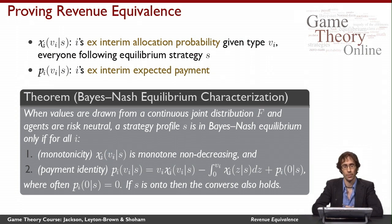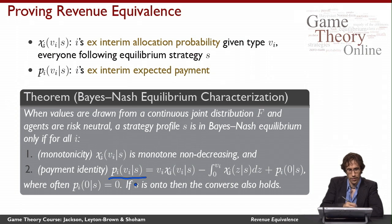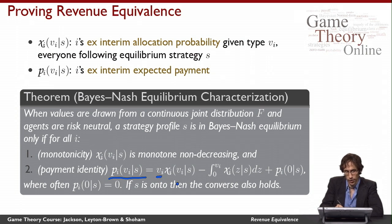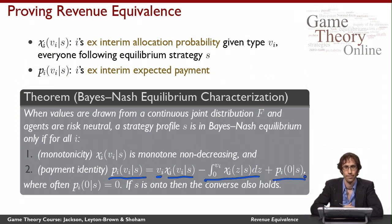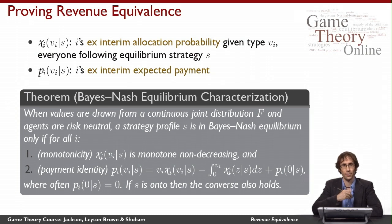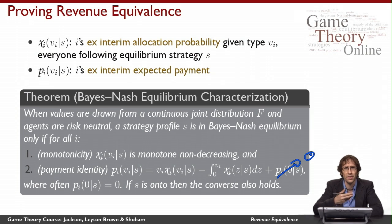So that's necessary for a Bayes-Nash equilibrium. The other necessary condition is the payment identity. The payment function — the x-interim expected payment an agent makes — needs to equal the agent's value for the good multiplied by the probability that they get the good, minus the integral from 0 to vi of this x-interim allocation probability, plus the expected payment that an agent of type 0 gets. It's often the case that we just want auctions in which an agent with the lowest possible valuation doesn't pay anything. If that's true, then the p(0) term goes to 0 in the payment identity and we get a slightly simpler expression.